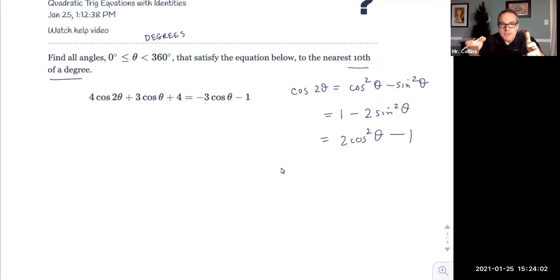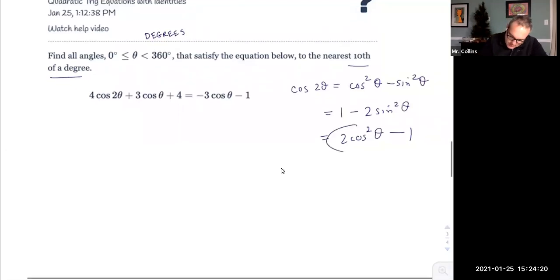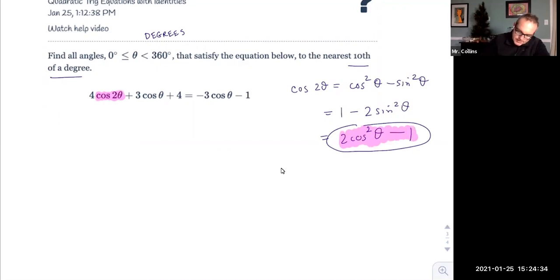You could use any one you want, but if you use the wrong one, you're going to have a lot more steps because all three of these versions of the identity are related by the Pythagorean identity that relates sine squares and cosine squares. Look at the rest of your problem. The rest of the problem is all written in terms of cosine, so pick the version that just has cosine. That might save you a lot of time.